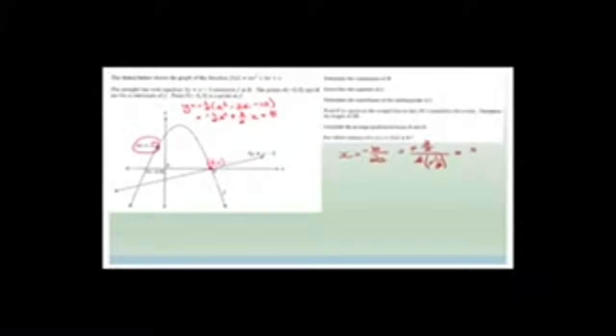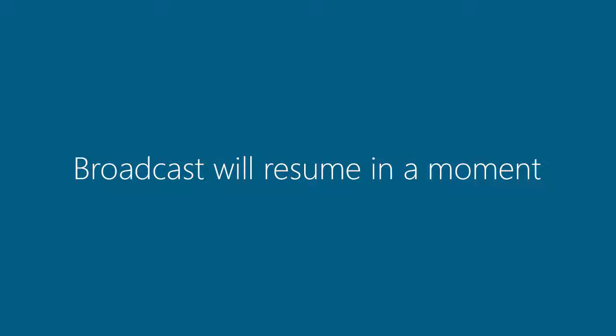Therefore, this cancels with this, and the minus cancels with that, and you're still left with 3 over 2, which is 1 and 1 half. So the x-value of the turning point is 1 and 1 half.